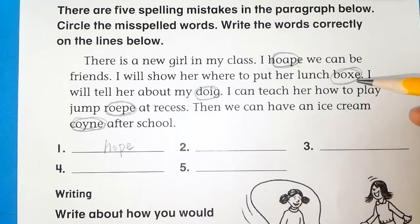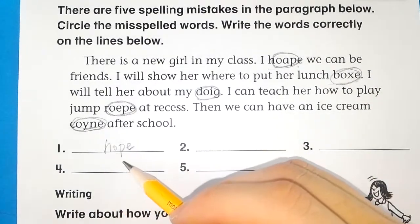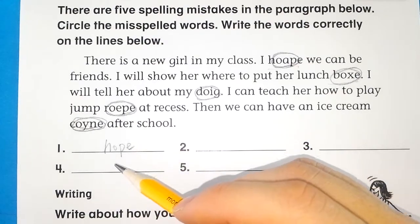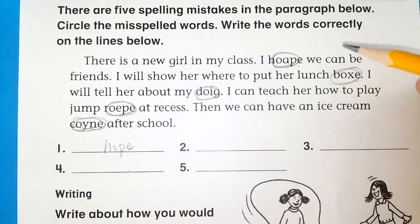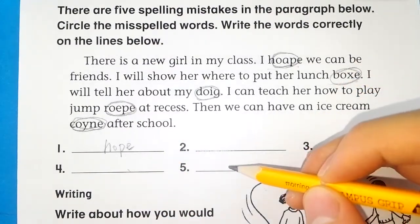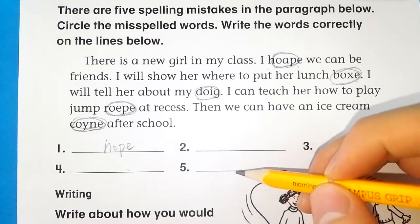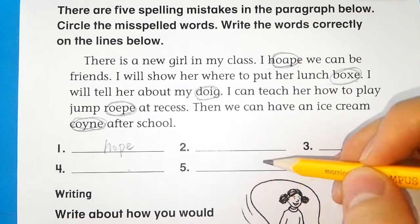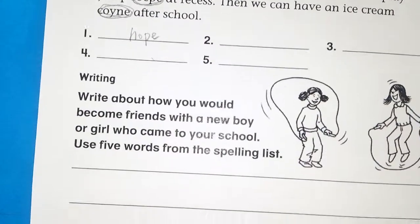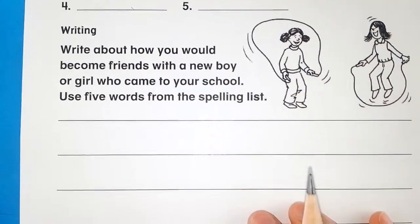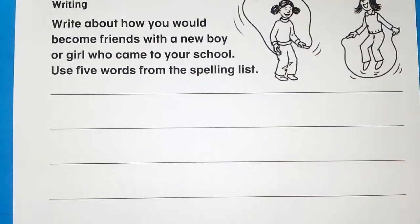My dog — I를 빼야 되죠. DOG. Jump rope — 4번은 rope, E를 빼고 R-O-P-E. 여기다 적고 5번, Cone — C-O-N-E가 되겠죠. 적어주시고 밑에 또 적는 연습이 있습니다.